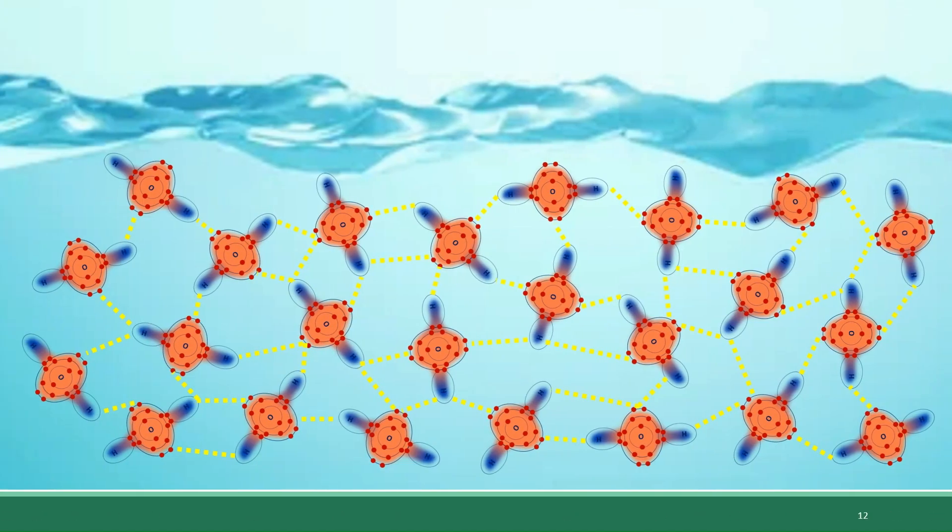The existence of this network of attractions within water, which we now know are called hydrogen bonds, makes it so that other substances that also have any sort of electric charge can be dropped into water and they will fit right into that network of attractions. So for example, we previously looked at the case of table salt, sodium chloride.